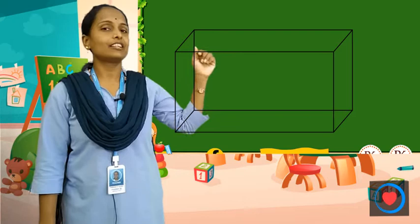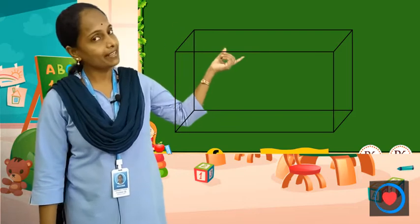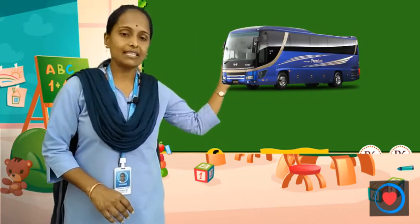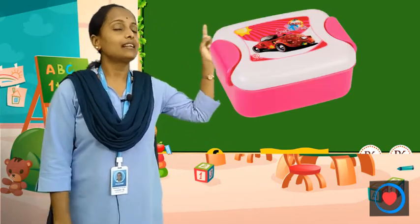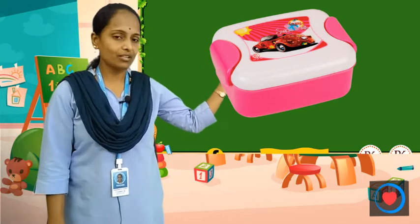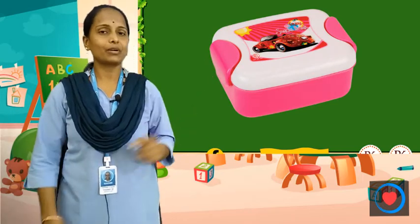Next, this is a cuboid. और cuboid के एक्जाम्पल है — bus, tiffin box. Okay?